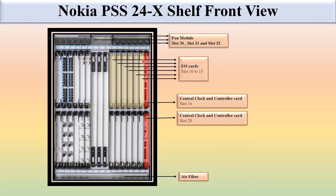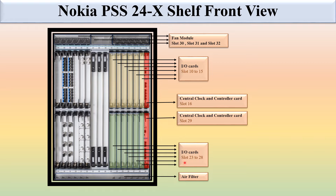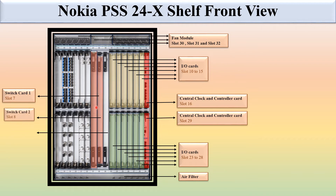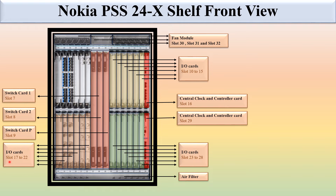Slots 10 to 15 are half-height slots. Slots 23 to 28 are fixed for the input/output card, also referred to as the photonic or traffic card. Slots 7, 8, and 9 are fixed for the switch cards: switch card 1, switch card 2, and a protection switch card. Slots 17 to 22 are also fixed for the input/output card.